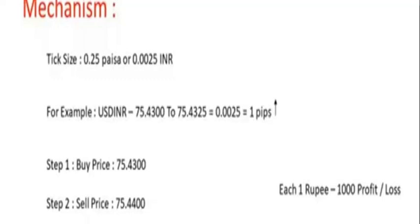The lot size in currency trading is always 1000. So if you buy at 75.43 and sell at 75.44, you will be making a profit of 1000 rupees. Now let us look at how the currency pairs appear in your stock broker's app.